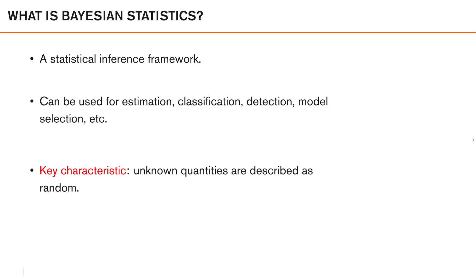So what is Bayesian statistics? It's a statistical inference framework, which means that we can use it to make decisions or draw conclusions regarding some parameters of interest using data where there is typically some inherent uncertainty. A typical example is that the data is imperfect and noisy and can thus not give us exact information regarding what we are interested in. Instead, we want to use Bayesian statistics to try to extract as much good information as possible from our noisy observations. In many ways, Bayesian statistics is a very flexible framework which can be used to form many different types of decisions.